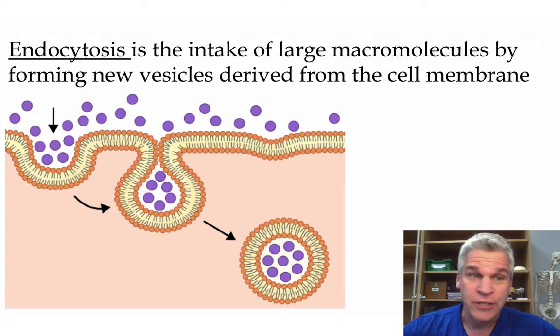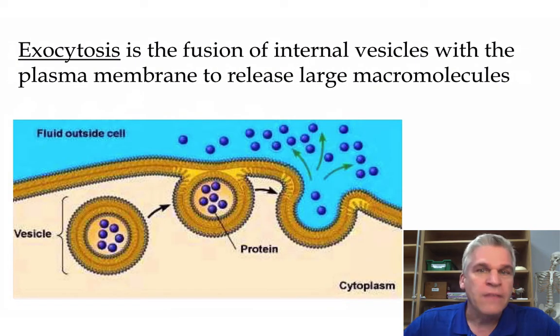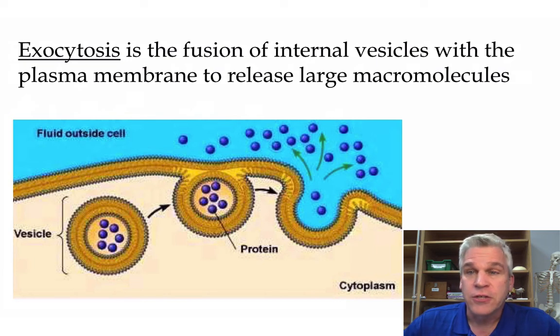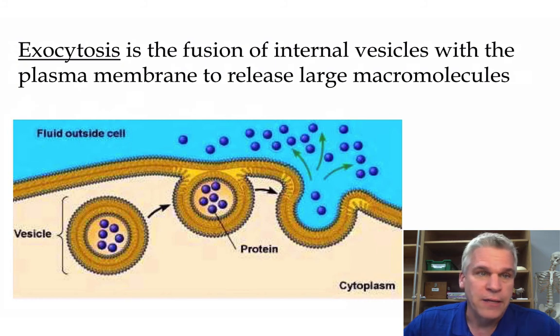The opposite can actually happen as well. In exocytosis, internal vesicles will fuse with the cell membrane in order to release those large macromolecules. That's just a quick overview of the ways in which things can get in and out of the cell. I'll see you in class.